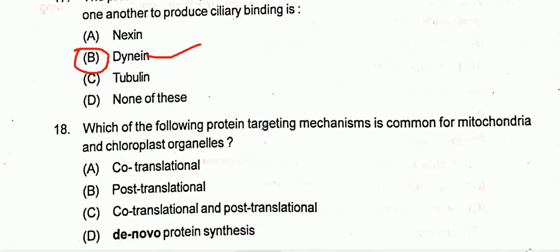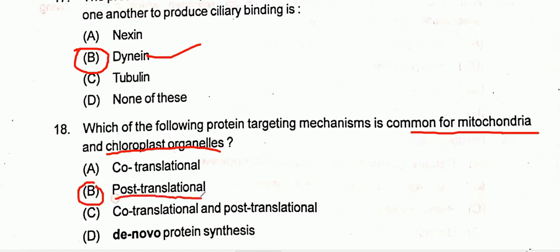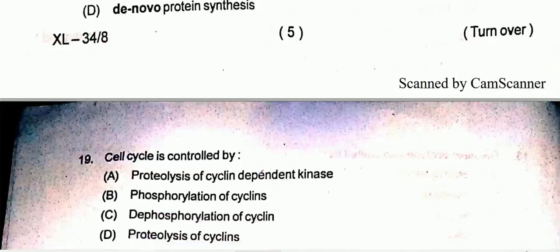Question eighteen: which protein targeting mechanism is common to both mitochondria and chloroplast? The mechanism that is similar in both mitochondria and chloroplast is post-translational targeting, so option B will be the correct one.